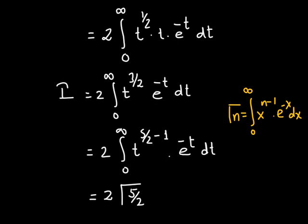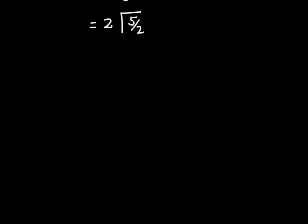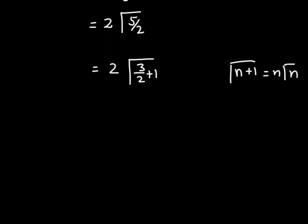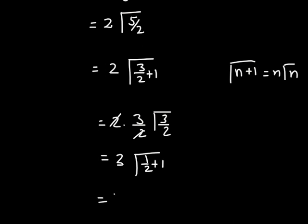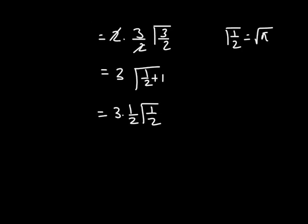Now we need to find the value of gamma of 5/2. We rewrite gamma of 5/2 as gamma of 3/2 plus 1, and use the fact that gamma of n plus 1 equals n times gamma of n. So we have 2 times 3/2 times gamma of 3/2. The 2 and 2 cancel, leaving us with 3 times gamma of 3/2. Then gamma of 3/2 is written as gamma of 1/2 plus 1, giving us 3 times 1/2 times gamma of 1/2. Since gamma of 1/2 equals square root of pi, we get 3/2 times square root of pi.